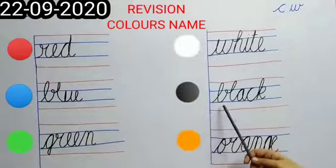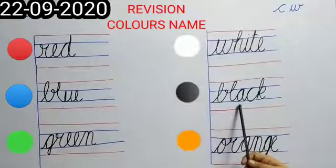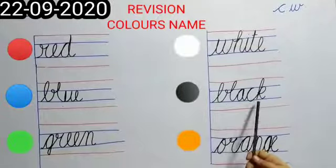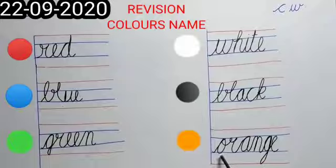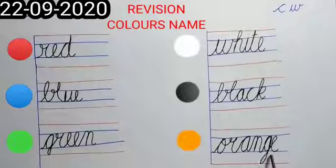Which color is this? This is black color. Write down B-L-A-C-K, black. Which color is this? This is orange color. Write down O-R-A-N-G-E, orange. Students, this is your question number one.